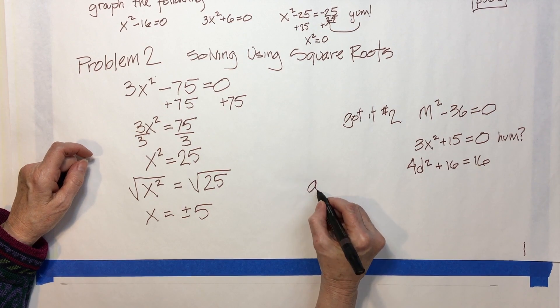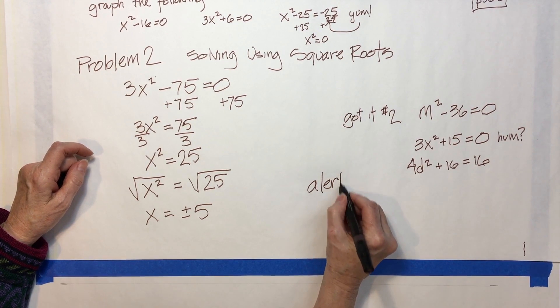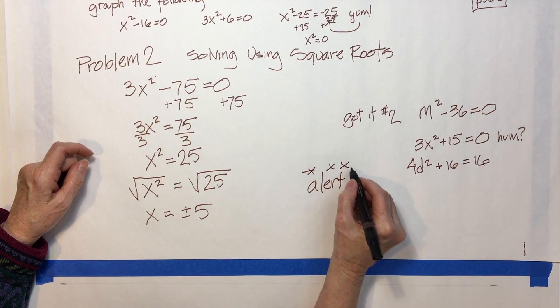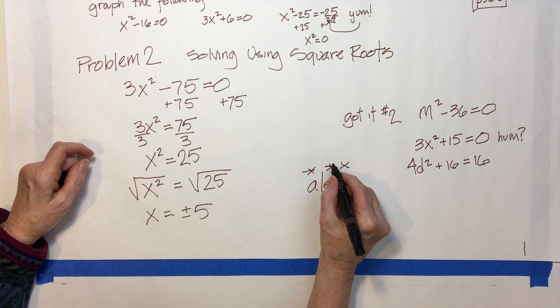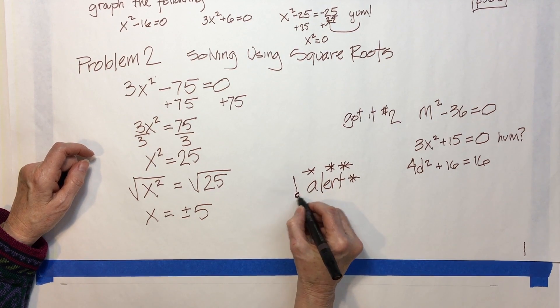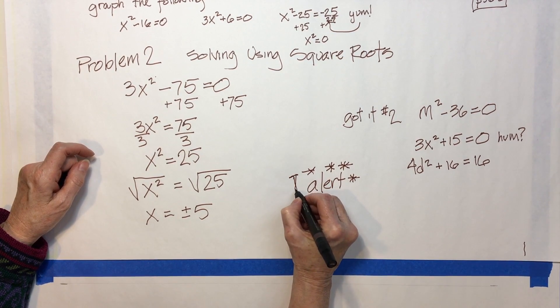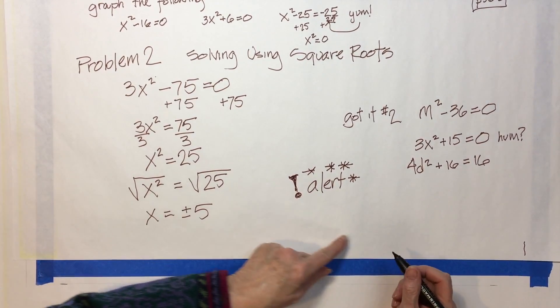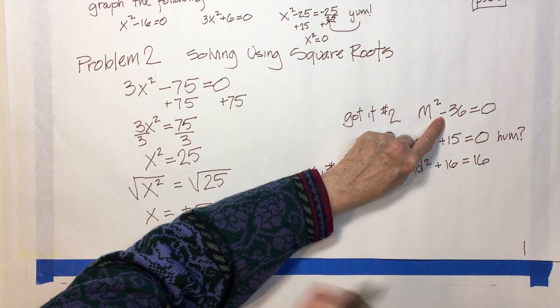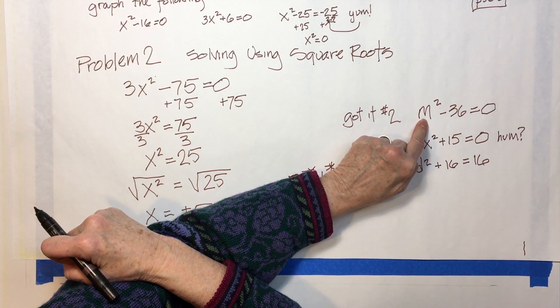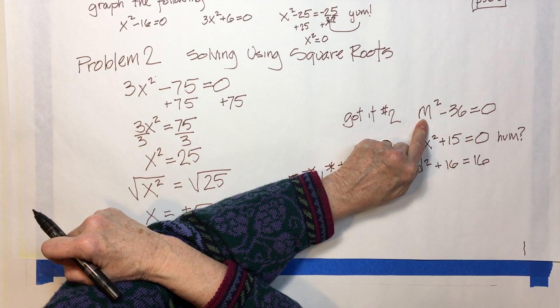Alert. Alert here. Watch this. Okay, you move this over, it becomes positive, doesn't it? So it's m squared equals 36. Yes, you can take the square root of both of those and you'll find that it's plus or minus six.